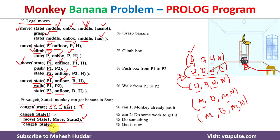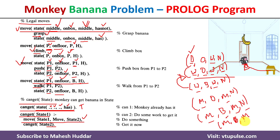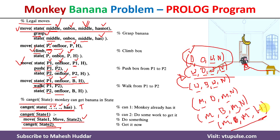We check again whether we have reached the goal — we have not, because we are expecting 'has'. We go back and execute one more move. The state is: middle, on top of box, middle, and not. This exactly matches the initial conditions for grasp. Grasp is executed. The monkey is now at middle, on box, box at middle — and the last component changes from 'not' to 'has'. The monkey got the banana. Can_get_state returns true and execution stops. The monkey has gone from the initial state to the goal state.